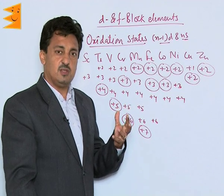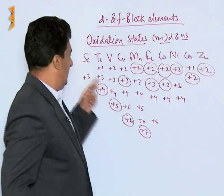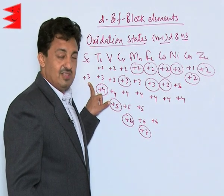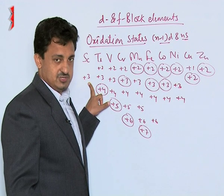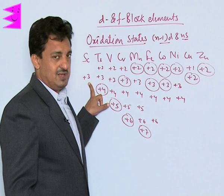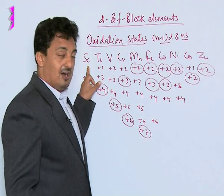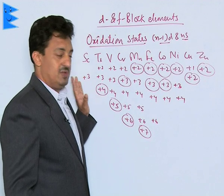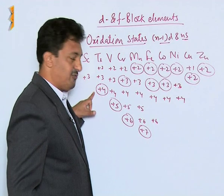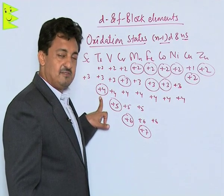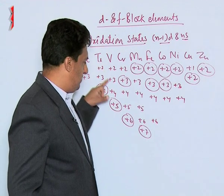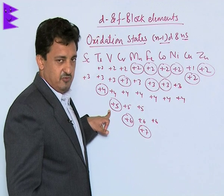Let us see what oxidation states we find for the 3d series elements, starting from scandium to zinc. Scandium shows only +3 — it is the only transition element which does not show variable oxidation states, because it is only stable in +3. It doesn't show +1 or +2; being in group 3, it has only three valence electrons. Titanium has four electrons in group 4, so it can show +2, +3, and +4, with +4 being its most common oxidation state. Vanadium can show +2, +3, +4, and +5, with +5 being the most common.